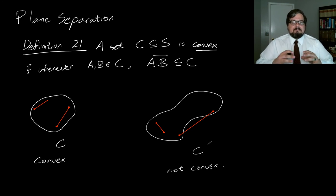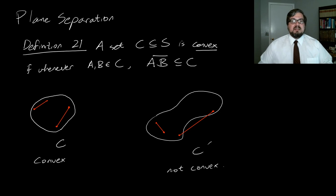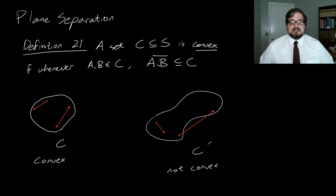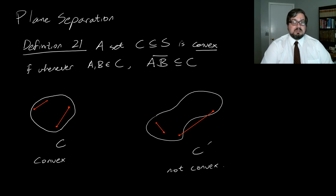A convex set behaves well with respect to the types of structures we're looking at. For instance, you can show that in a convex set, if you take any three non-collinear points, the triangle with those three points as vertices is also a subset of C. We're going to use this concept of convexity to define what we mean by a line separating a plane into two half planes.